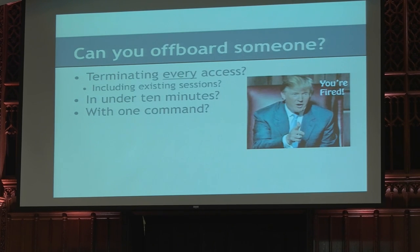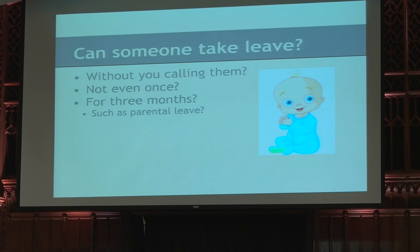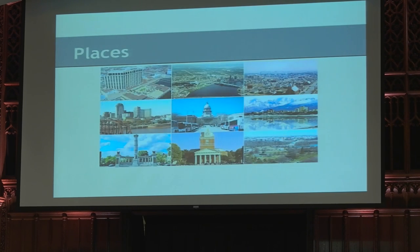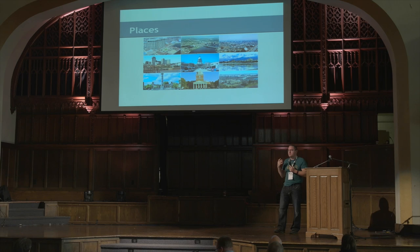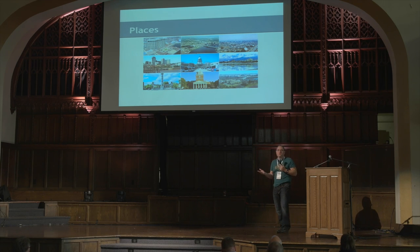Now let's say this person isn't working out and we need to fire them. How quickly can you do that? And are you certain they can't accidentally do something they were able to do before but now shouldn't be able to? But let's say we really do like this person and they do something silly like get married and have a kid, and they want to go spend time with that kid. Can we let them do that successfully and safely? How many of you think you could take a month off from work and not have the place blow up?